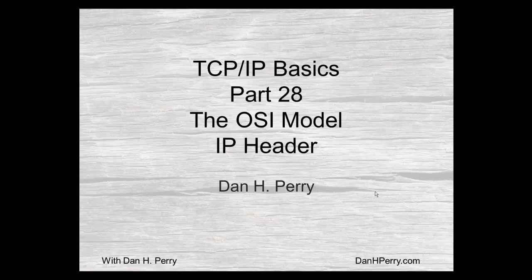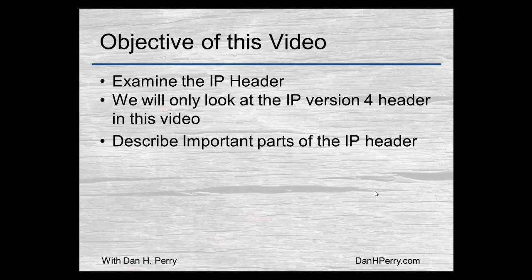Dan Perry here and this is part 28 of our series on TCP IP basics. We're now getting into the IP header — your network layer and your IP header. We're going to look at the IP header, at least the beginning of it. We're just going to talk about version 4 of TCP IP; we're not going to get into version 6.